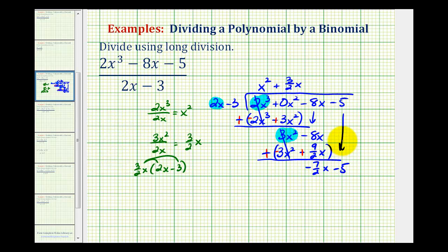Then bring down the next term. Now we go through this process one more time. We want to know what times 2x would be equal to negative 7 halves x. Which again is not an easy question, so we'll go ahead and perform division.